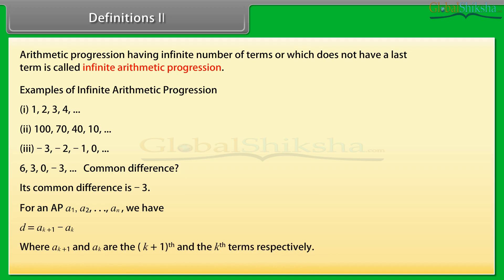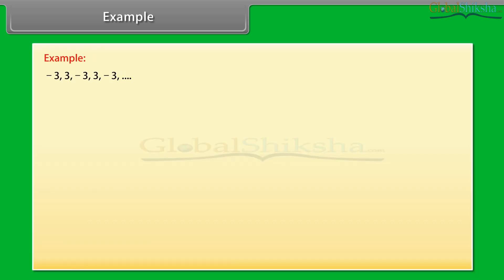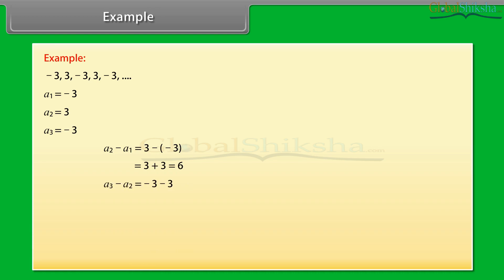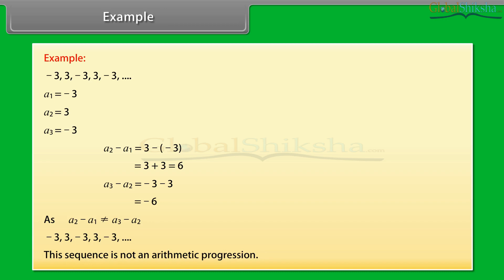Let us now solve some examples. Observe this sequence — we will find out whether these numbers form an AP or not. Here A1 is −3, A2 is 3, A3 is −3, and so on. Now A2 − A1 = 3 − (−3) = 6. Also A3 − A2 = −3 − 3 = −6. Since A2 − A1 is not equal to A3 − A2, the given sequence is not an arithmetic progression.